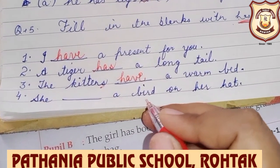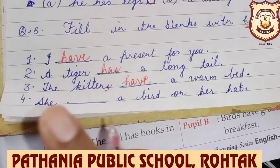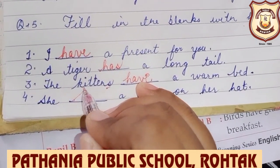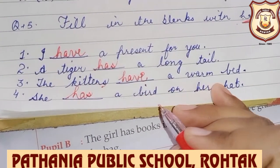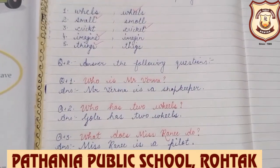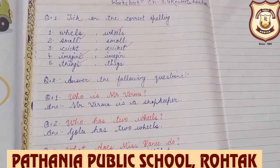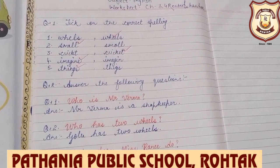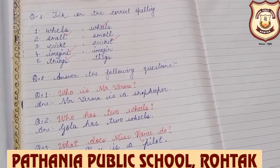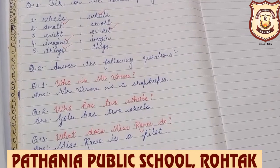She dash a bird on her hat. She — she is a girl, singular, one. So what will we write here? Has. She has a bird on her hat. This worksheet you have to do in your notebook and you have to revise chapter number three and four and use of has and have for your test. All the best for your test. Writing should be neat and clean and pics must be clear. Okay? Bye. Take care everyone and all the best once again. Bye.